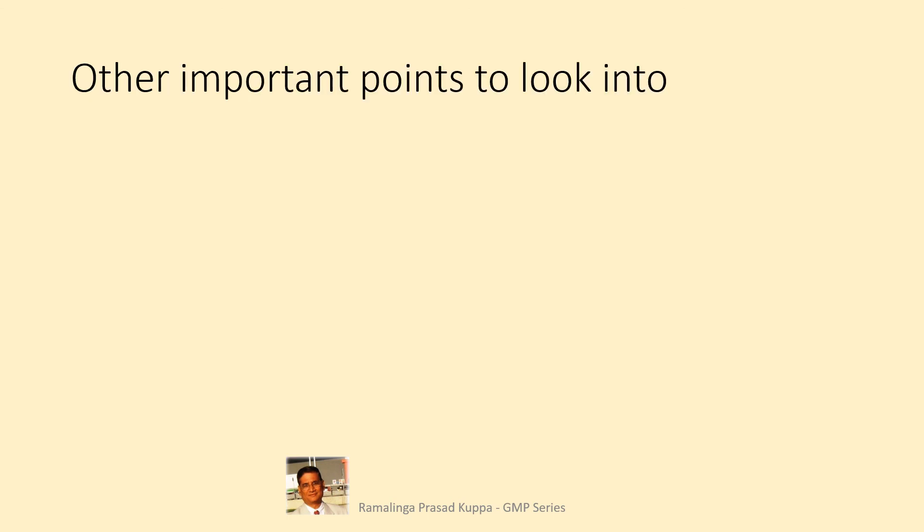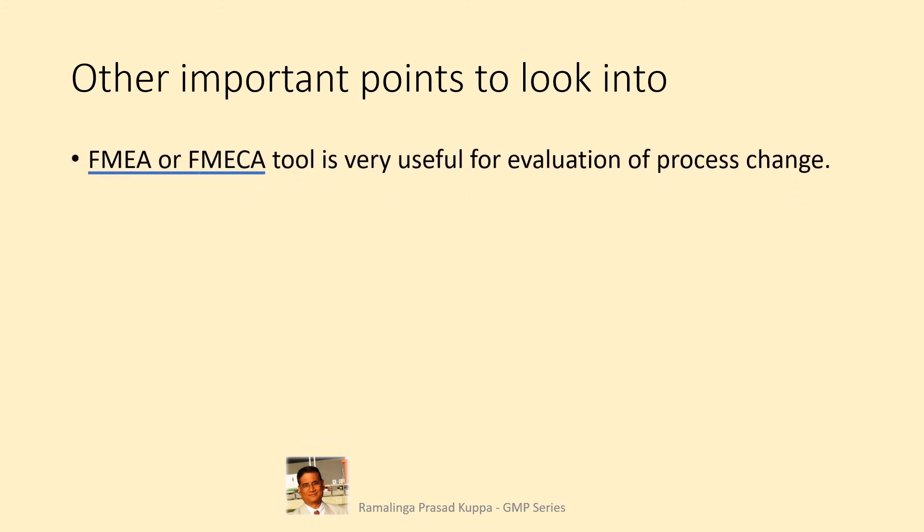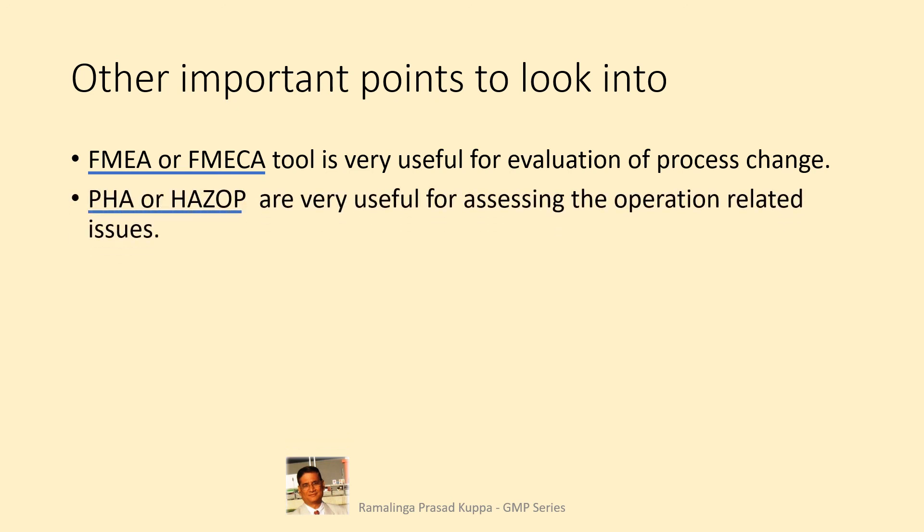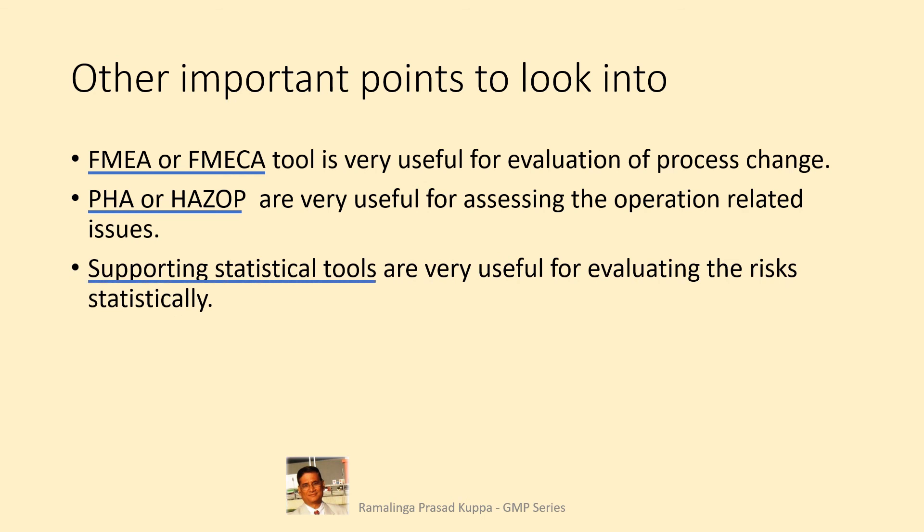Let us see other important points. FMEA or FMECA tool is very useful for evaluation of process change. ICH Q9 refers to these useful tools for risk assessment; the intent of each tool is described well in the guideline. PHA or HAZOP are very useful for assessing operation-related issues; these two tools are good for evaluating the risk involved in personal safety and other hazards involved in the process change. Supporting statistical tools are very useful for evaluating risk statistically, including control charts, design of experiments, histograms, Pareto charts, process capability analysis charts, etc.